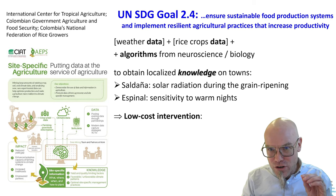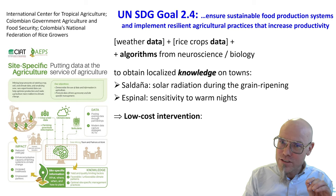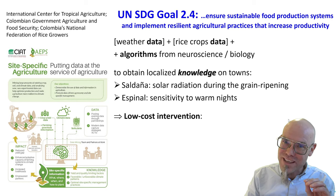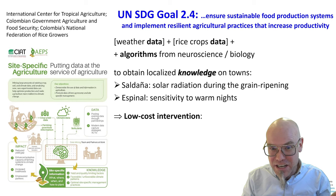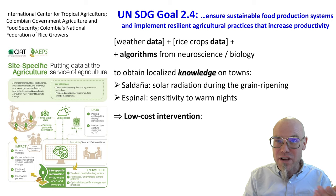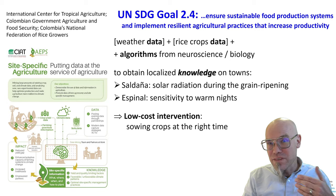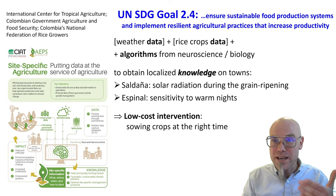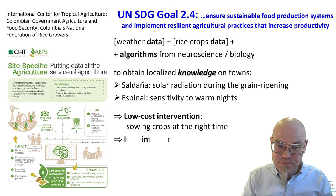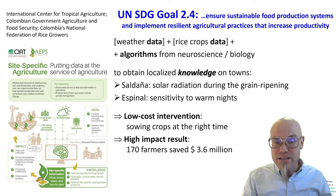This is a very low-intervention policy — it doesn't cost much to make the world a better place. The weather data already exists, the rice crop data already exists, and even these algorithms already exist. The solution was simply to sow crops at the right time, and with that they achieved very high impact.